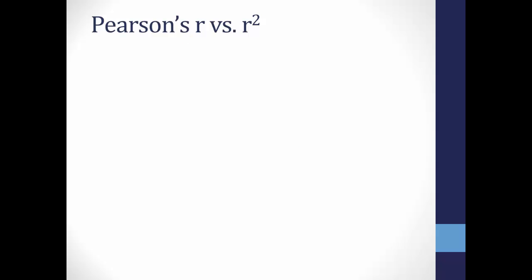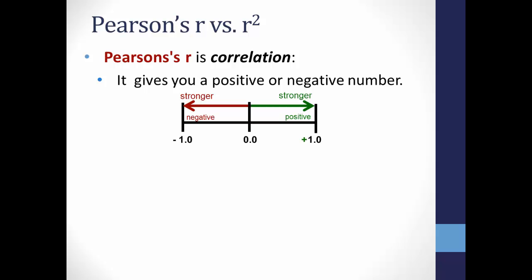You may hear Pearson's R and R-squared. What's the difference? Pearson's R is correlation, telling you the strength of association and whether it is a positive or negative correlation.